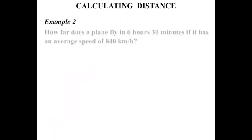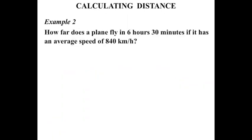Example 2. How far does a plane fly in 6 hours 30 minutes if it has an average speed of 840 km per hour? Well the average speed is given, let's write that down. And the time is 6 hours 30 minutes. We'll write that as 6 and a half hours.